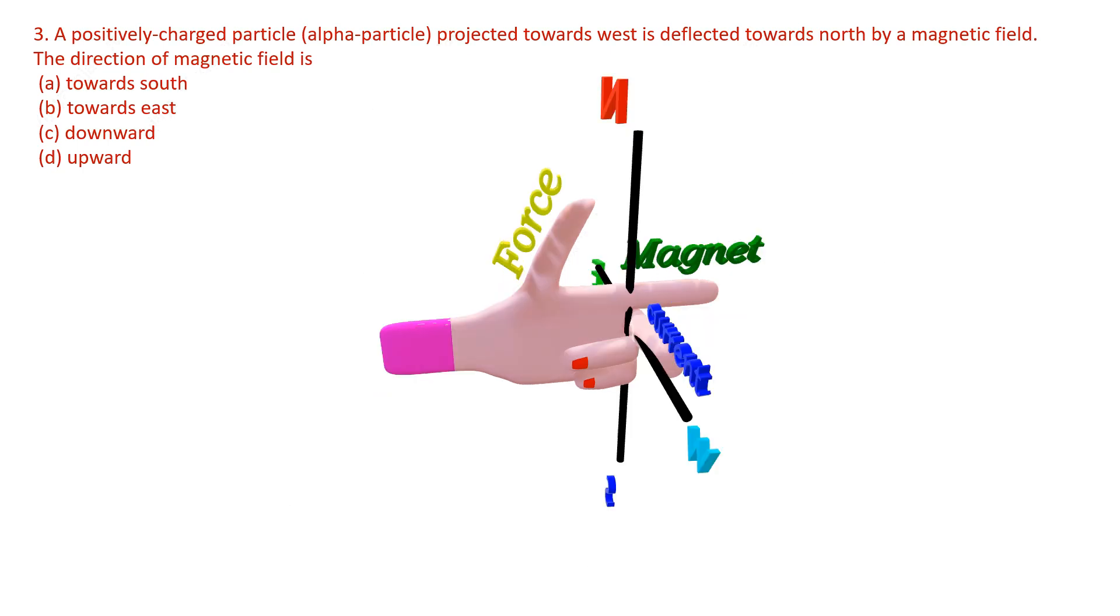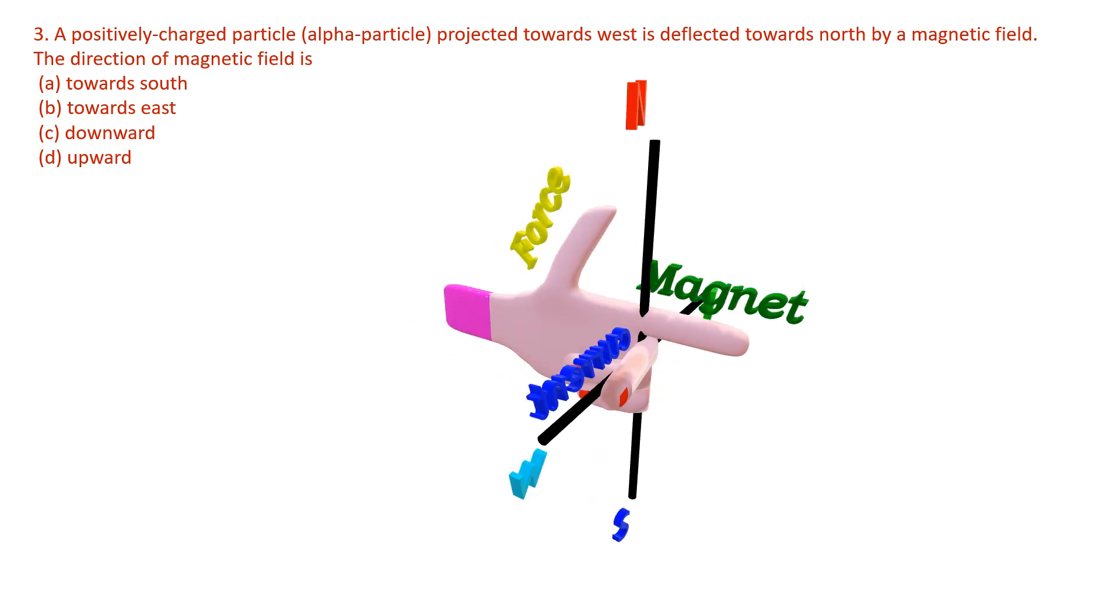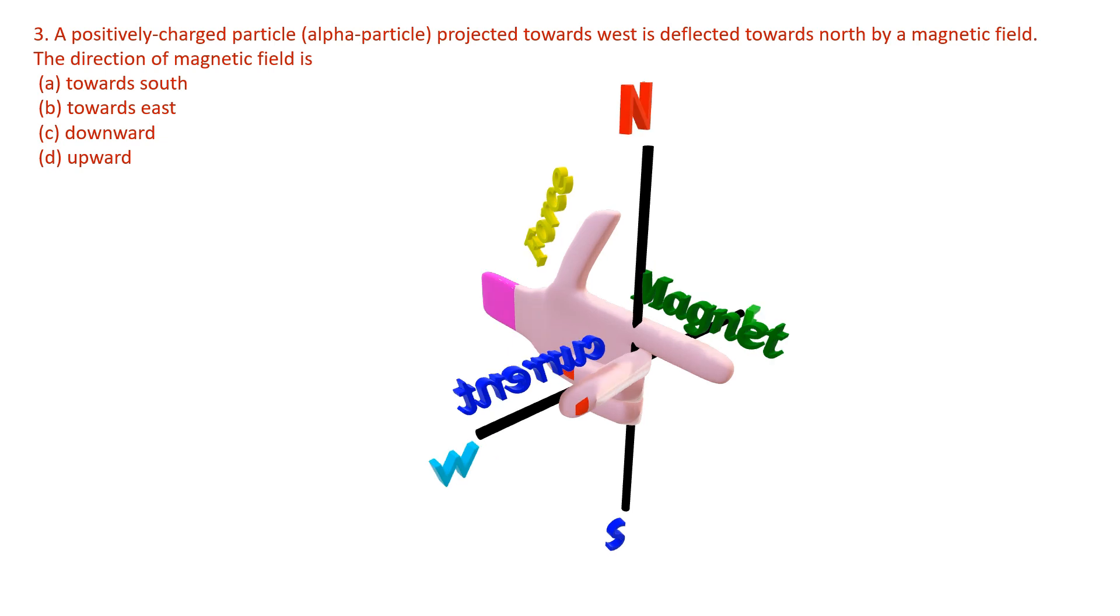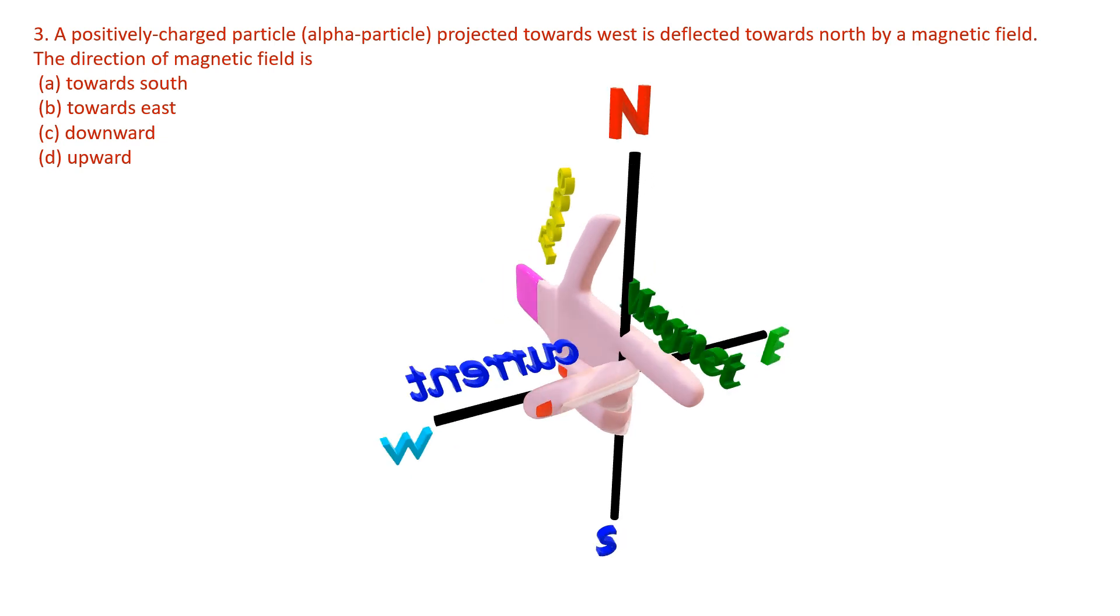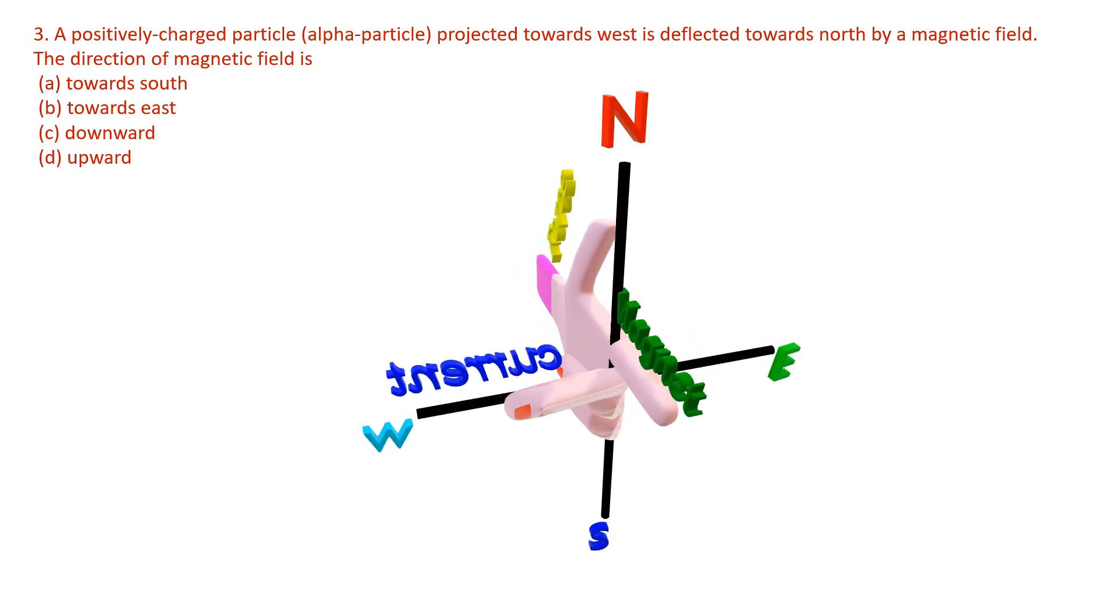We kept our left hand as stated in the question following Fleming's left hand rule, that is alpha particle projected towards west and it is deflected towards north by a magnetic field.